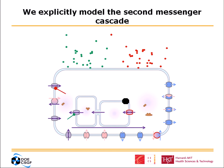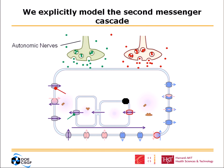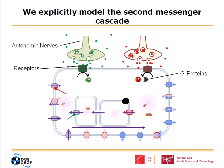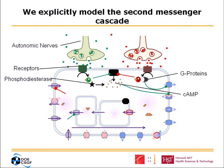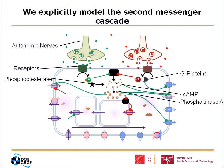We explicitly model this second messenger cascade, which hasn't been incorporated yet into these models. This includes the autonomic nerves — both sympathetic and parasympathetic — which contain and release the neurotransmitter. The neurotransmitter binds receptors on the cell surface. These receptors activate second messengers called G proteins. G proteins in turn directly modulate some ion channels, and they also modulate the activity of adenylate cyclase, which is another protein that generates another second messenger called cAMP. cAMP also changes the properties of one channel, and cAMP is destroyed — it exists in an equilibrium between the generative process by adenylate cyclase and the destructive process by the enzyme phosphodiesterase. The last second messenger in the cascade is phosphokinase A, which is activated by cAMP and has a number of effects on the ion channels in the cell.